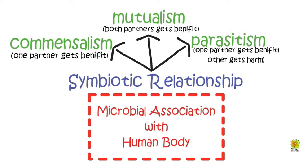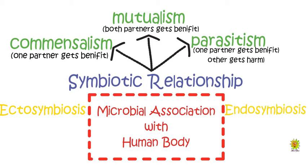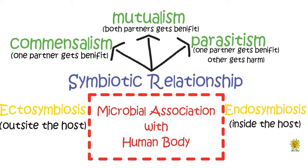In the human body, microbes form associations that can be categorized into ectosymbiosis or endosymbiosis. In ectosymbiosis, the organism remains outside the host body, while in endosymbiosis, one organism lives or stays inside another organism. That covers the association of microorganisms with the human body.